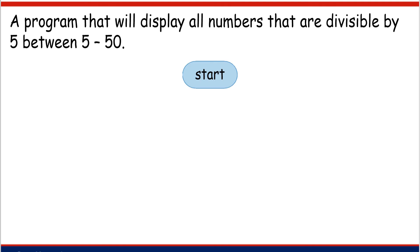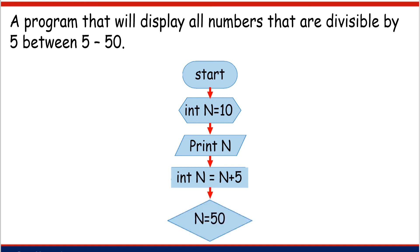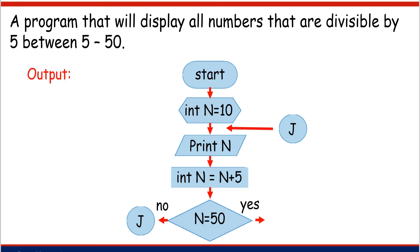A program that will display all numbers divisible by 5 between 5 and 50. First, write the start symbol. Inside the initialization symbol, write the first value: int n is equal to 10. Then print the value of that variable. After that, write the pattern inside the process symbol: int n equals n plus 5. Write the decision symbol with the value obtained by adding the last value and the pattern. Then the no direction, the entry on-page connector, the exit on-page connector, the yes direction, and finally the end symbol.